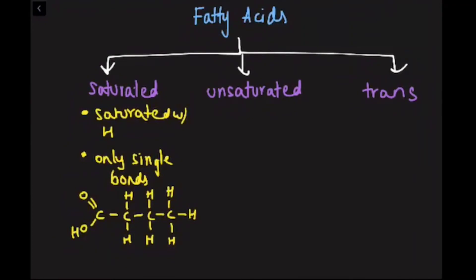Now this fatty acid is straight, meaning it can be tightly packed. And this allows it to be a solid, which is why saturated fats are usually solids. These are animal fats, like butter, for example.